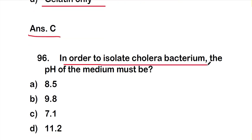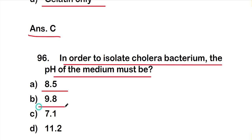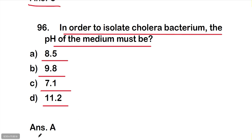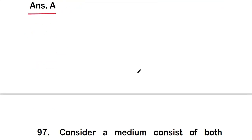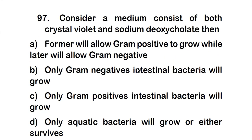Question number 96: In order to isolate the cholera bacterium, the pH of the medium must be — option A: 8.5, option B: 9.8, option C: 7.1, option D: 11.2. The right answer is option A — the pH must be 8.5 to isolate the cholera bacterium.